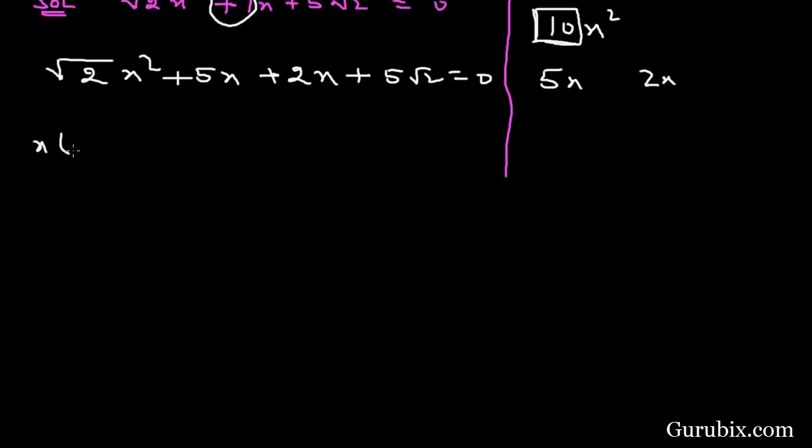Now we shall take x common from the first two terms. Then we have x(√2x + 5) + √2(√2x + 5) = 0.